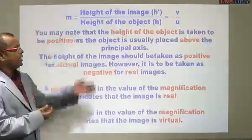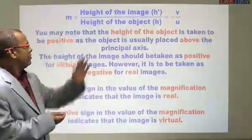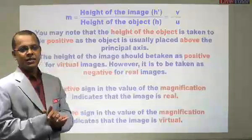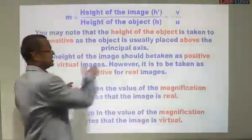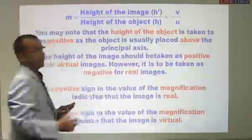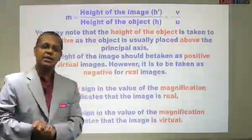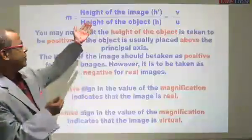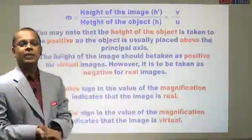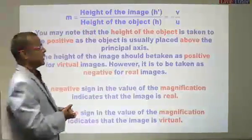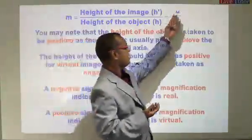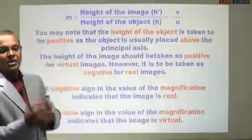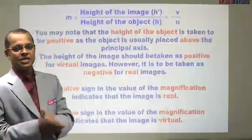So just to try to recollect some of the points from there, we know that the formula is height of the image by height of the object. Usually, height of the object is taken as H and the image is taken as H dash. Either you can say H1, H2 anyway, but you have to remember that height of the image is in the numerator. And the same can also be expressed as minus of V by U, where V is the image distance and U is the object distance.